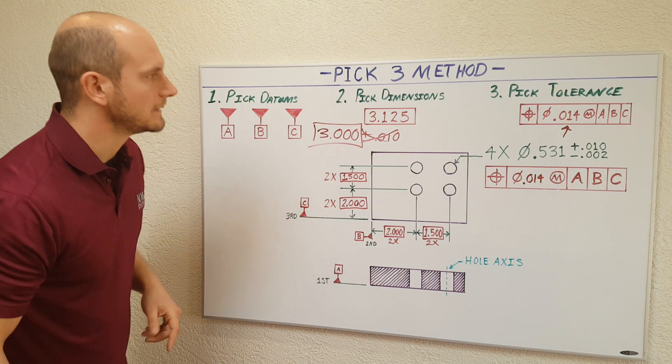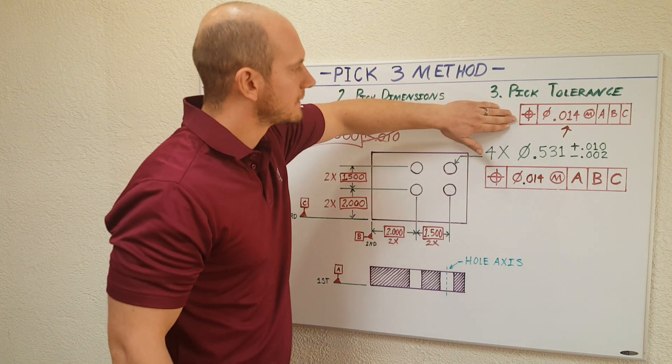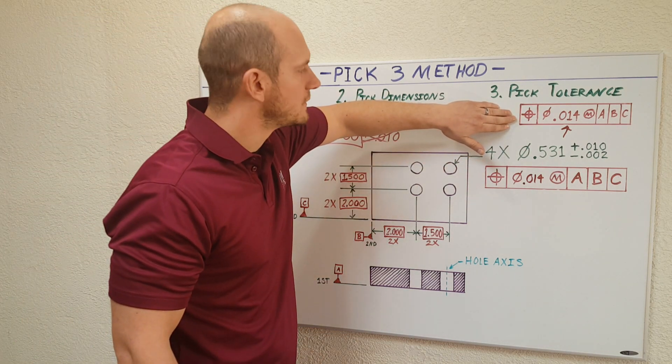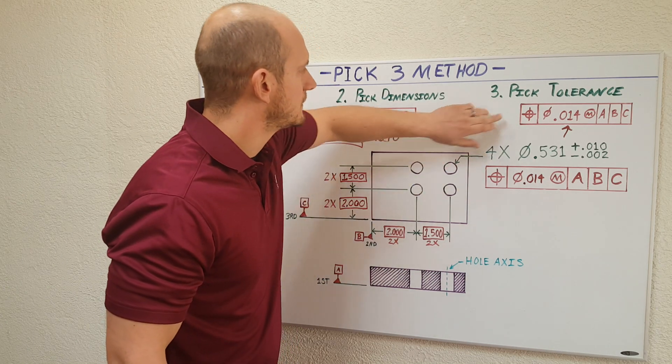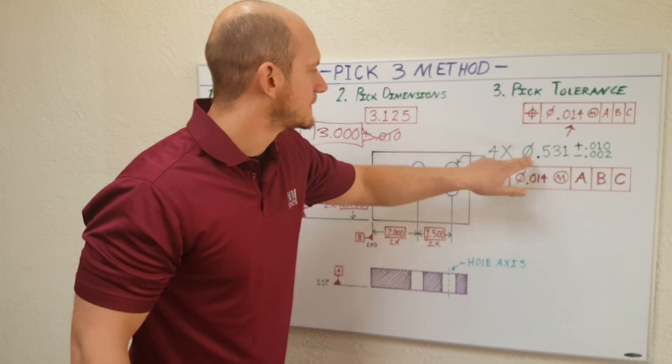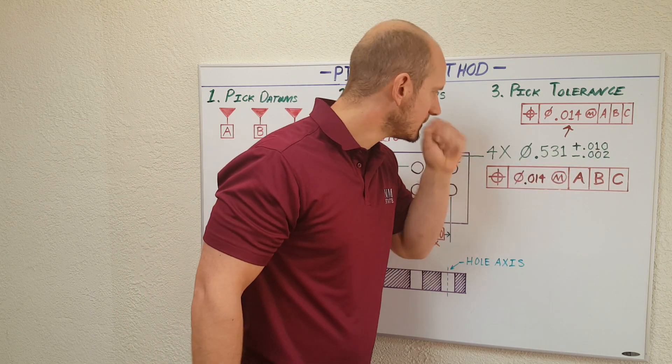Fourteen thousandths that you notice I've chosen here is very typical in industry. And also notice that I've entered my datums in the order that I selected them. First, second, third, A, B, and C. So, I've created this typical GD&T symbol that you can use in this type of situation. Go ahead and place it directly underneath your hole size and your hole size tolerance.